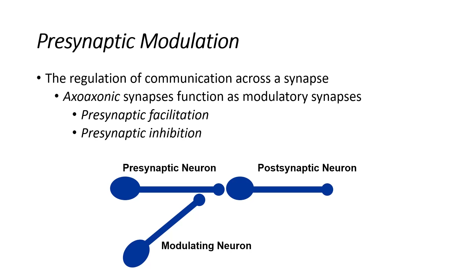I want to continue to reiterate that the modulating neuron is not leading to a membrane potential change. It's not going to create an action potential directly. It's not going to influence depolarization or hyperpolarization. It's only going to encourage or discourage — whether it's facilitation or inhibition — just modulating that presynaptic neuron and specifically how much neurotransmitter is being dumped into the synaptic cleft.